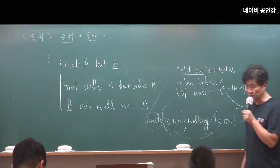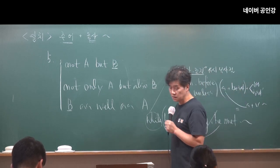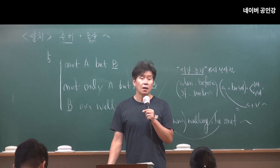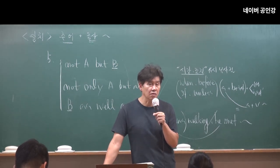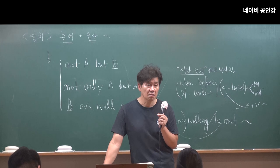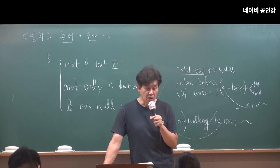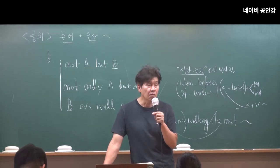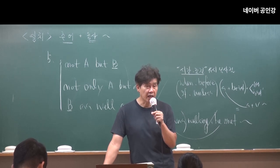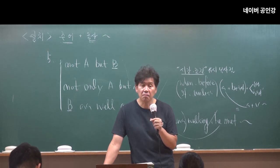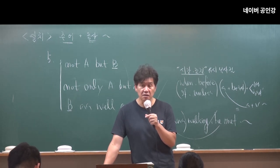문제 좀 봐봐. when 접속사 뒤에 alone이랑 형용사만 이렇게 들어와 있잖아. 그러면 when하고 alone 사이에 뭐가 생략된 거야? I am — 이게 주어, be동사가 생략되는 거야. I am, when I am alone — 내가 혼자 있을 때, 이게 되는 거지.